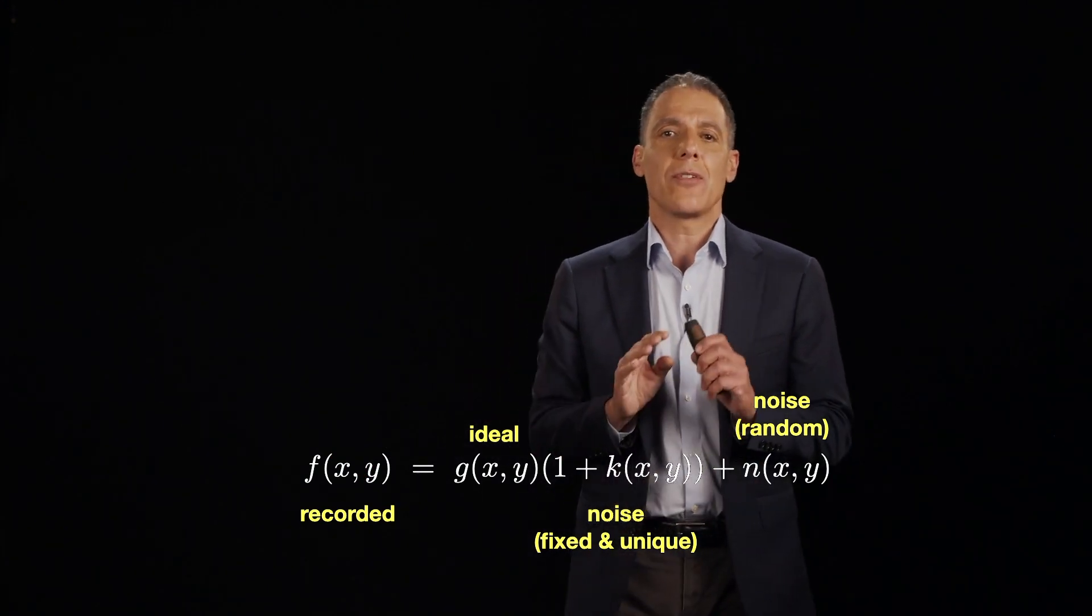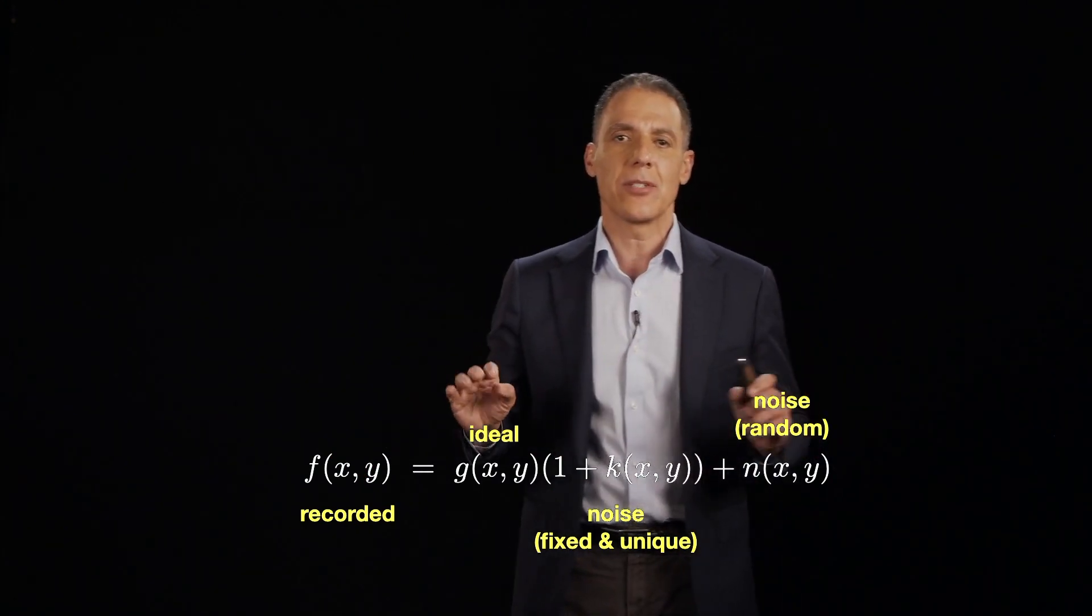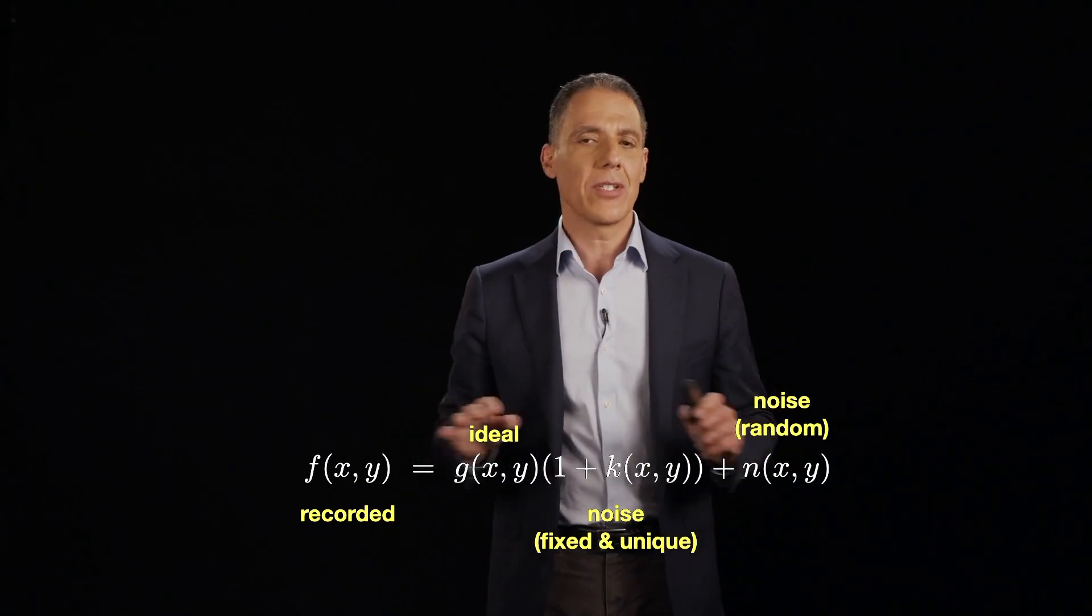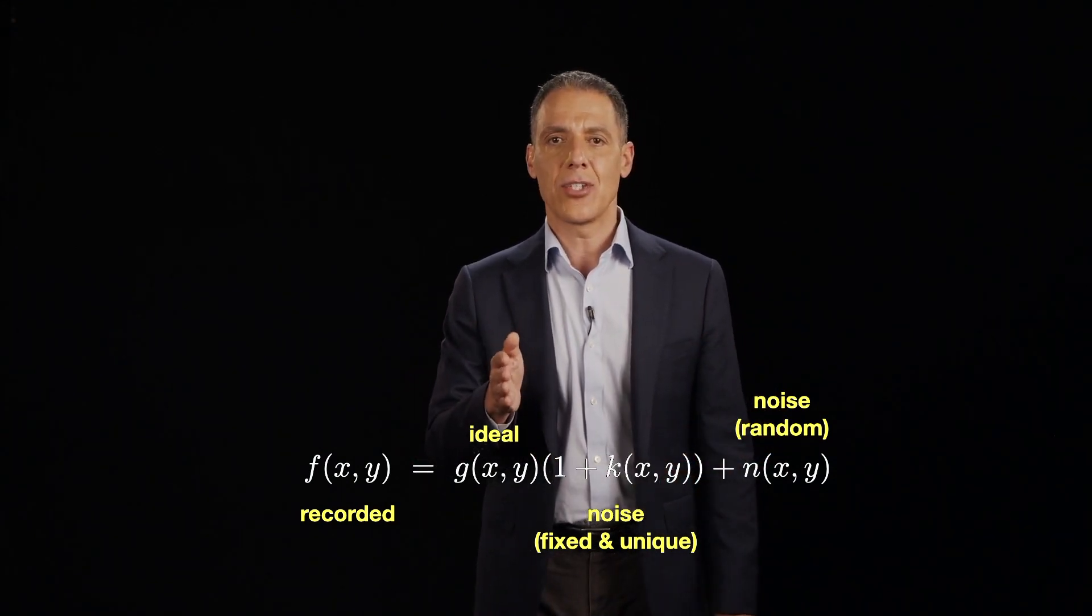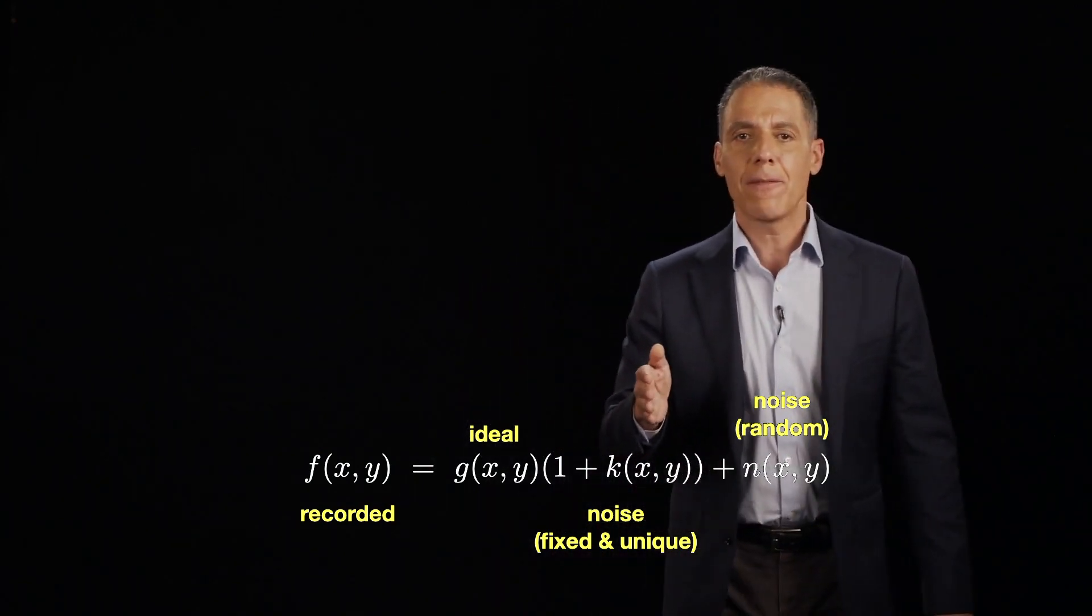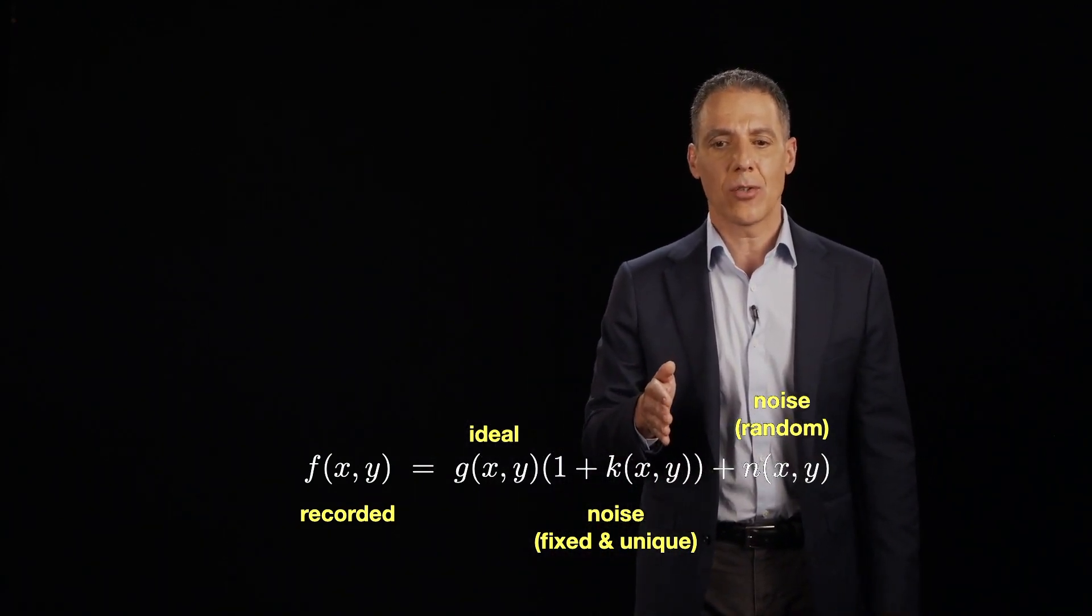An image here, the recorded image, the one that you actually record, can be modeled as a combination of a few things. The ideal image, g(x,y). So this is if you could have a perfect image with no sensitivities, no errors, nothing. What would that look like? So that's the g right here.